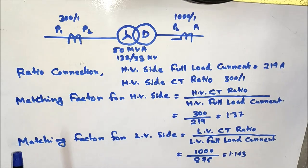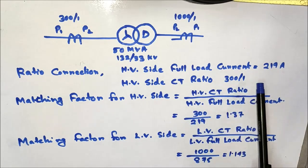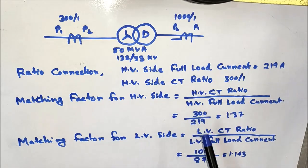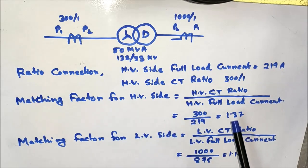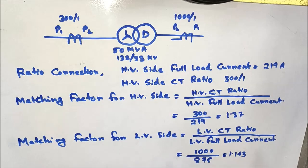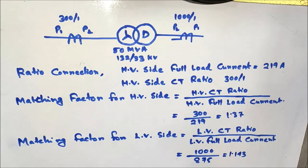We calculate the matching factor for HVCT and LVCT. The HVCT full load current is 219 A for a 50 MVA transformer, and the HVCT ratio is 300/1. Therefore, matching factor for HVCT equals HVCT ratio divided by HVCT full load current, which gives 1.37. The matching factor for LVCT is given by LVCT ratio divided by LVCT full load current, that is 1000 divided by 875, which equals 1.143.